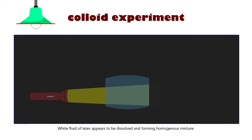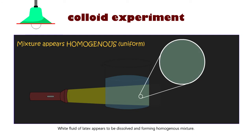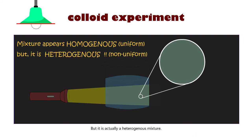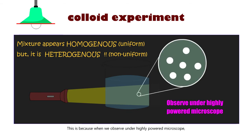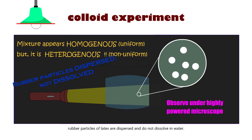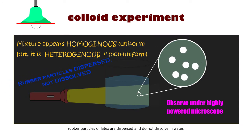The white fluid of latex appears to be dissolved, forming a homogeneous mixture. But it is actually a heterogeneous mixture. This is because when we observe under a highly powered microscope, rubber particles of latex are dispersed and do not dissolve in water. This mixture is called a colloid.